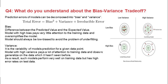Next question: what do you understand about bias-variance trade-off? Start by explaining what is bias, what is variance, and what is total error. Prediction error can be decomposed into two components: bias and variance. Total error equals bias squared plus variance plus irreducible error. What is bias? The difference between the predicted value and the actual value is bias.